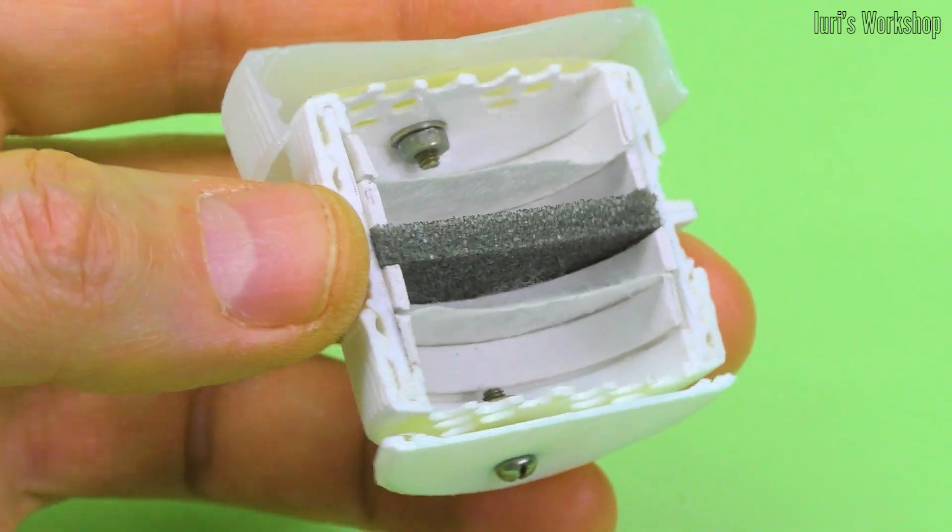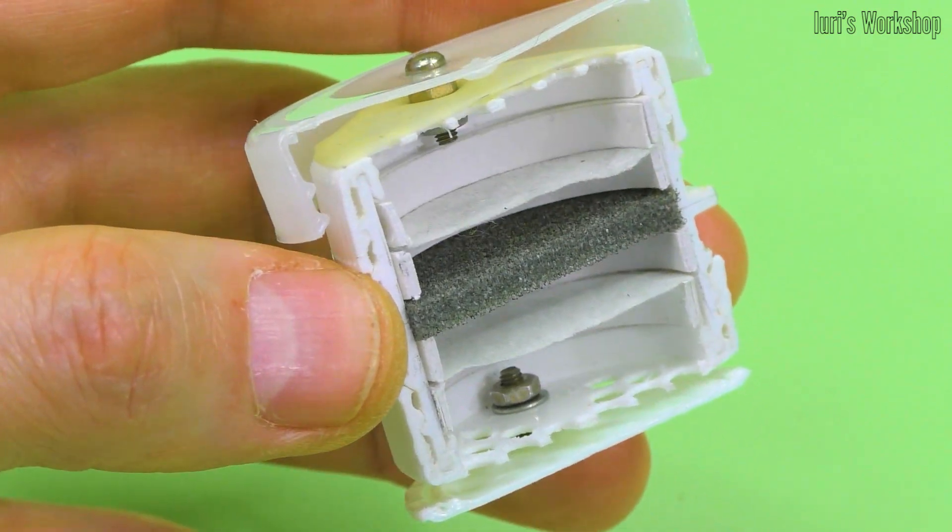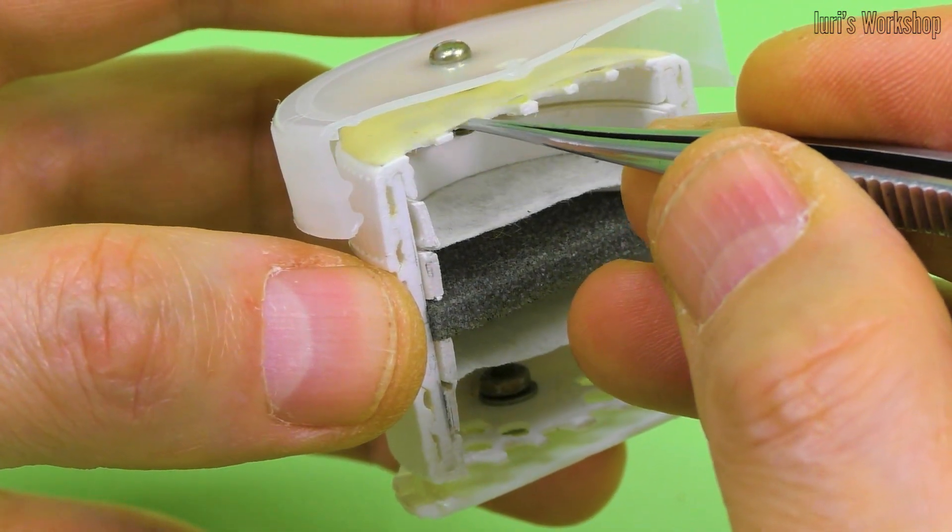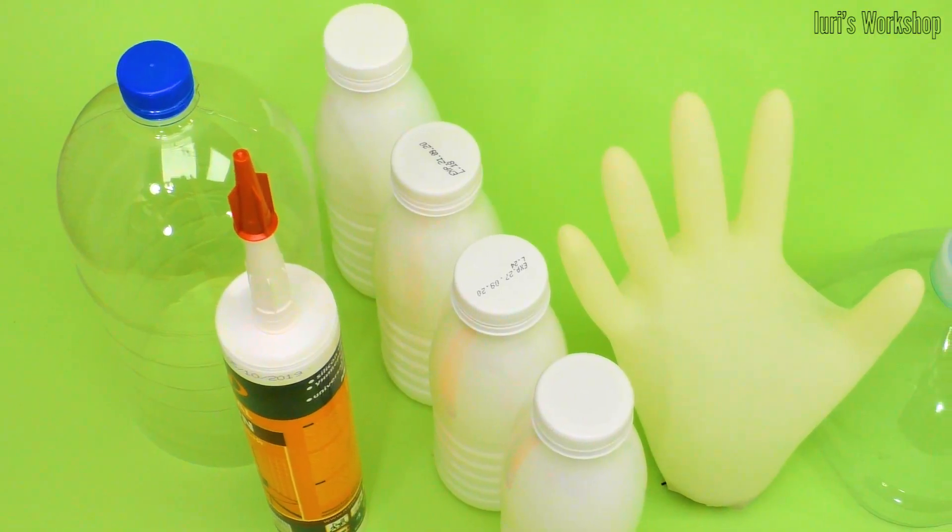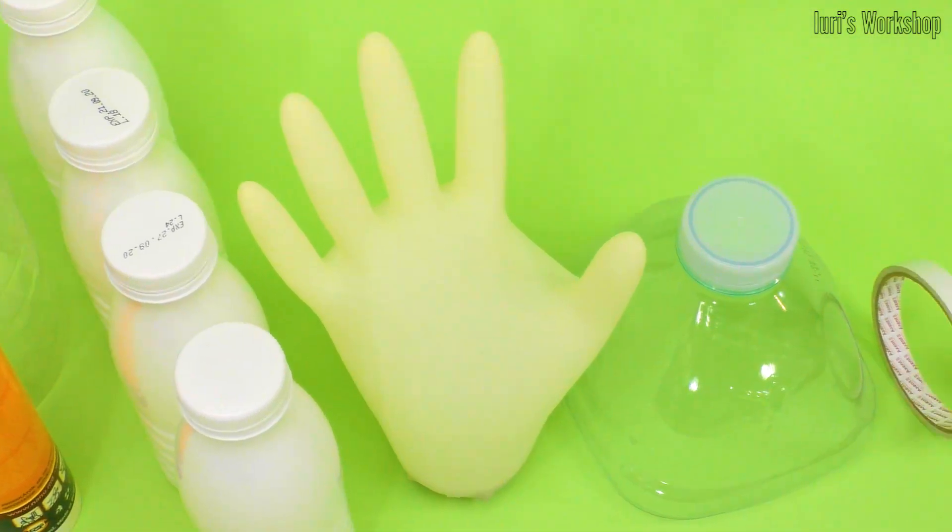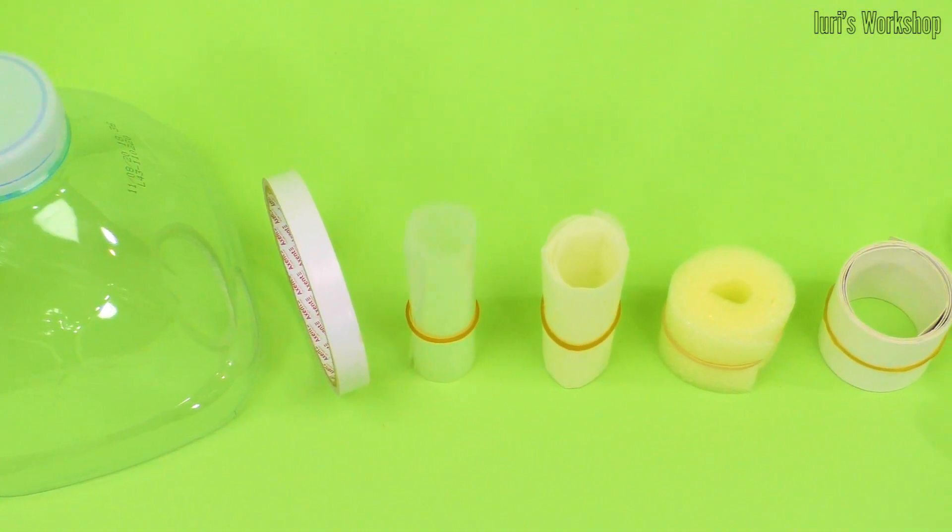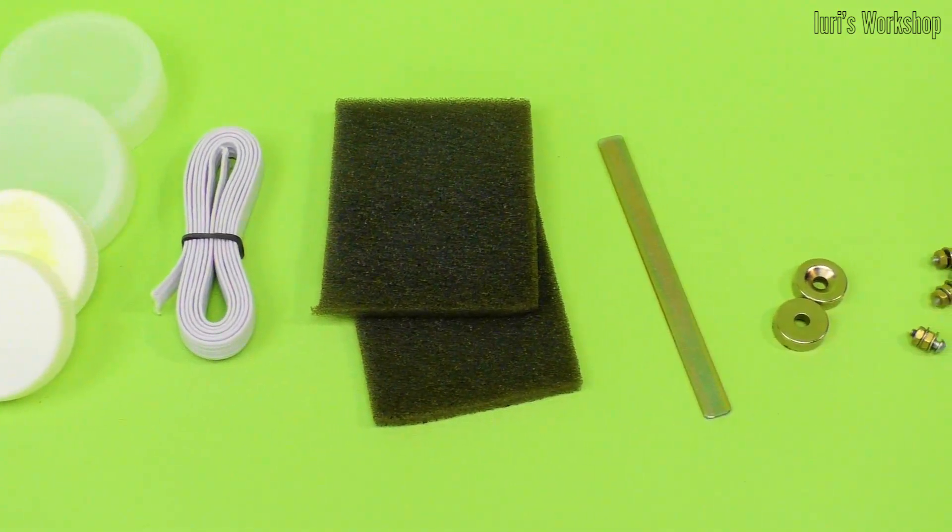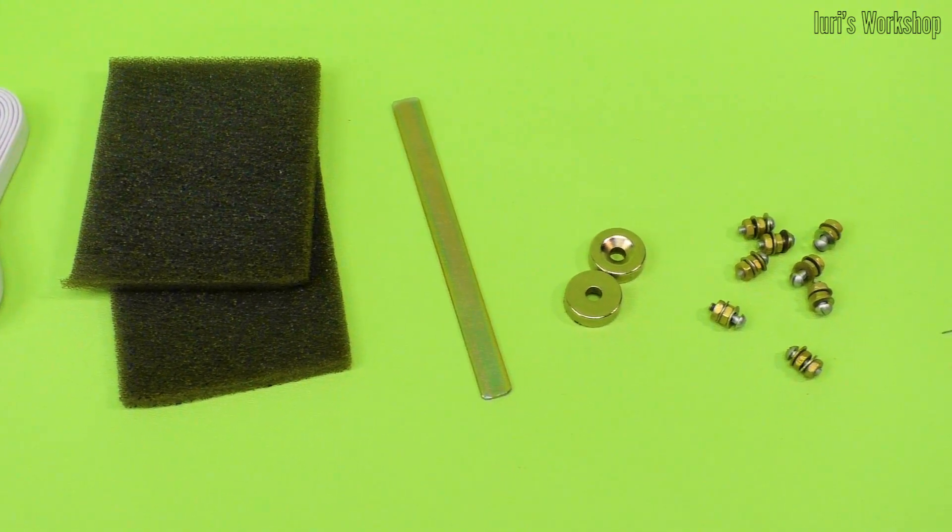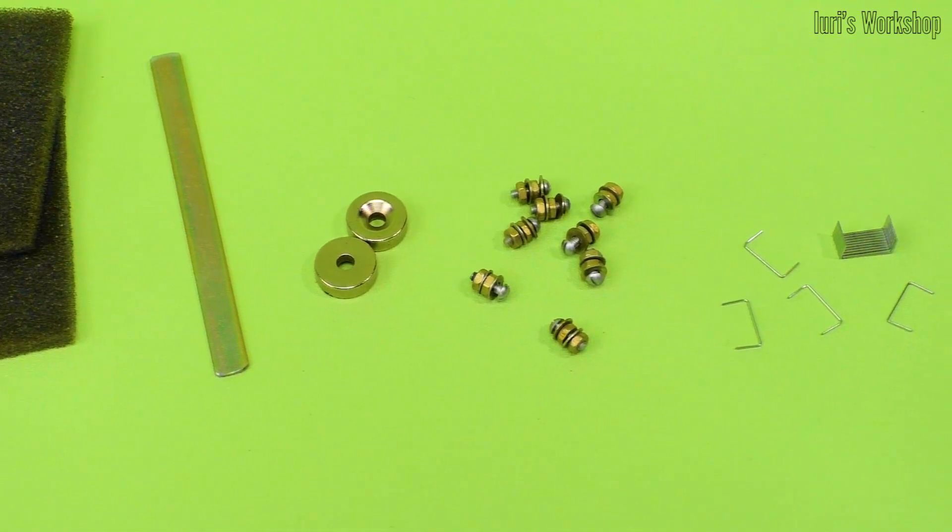The exhaled air cartridge differs only in the location of the membrane, which is located under the splash cap. A complete list of materials used and their sizes is in the description of this video. There you will also find a drawing of a template for making a valve.